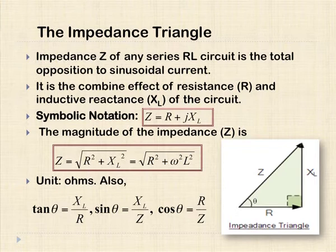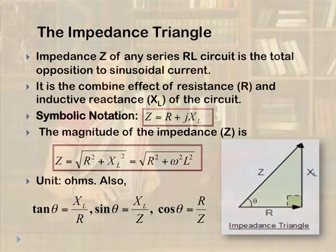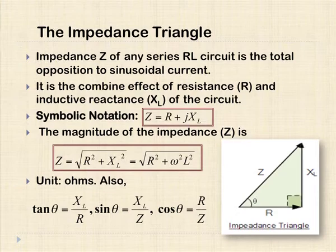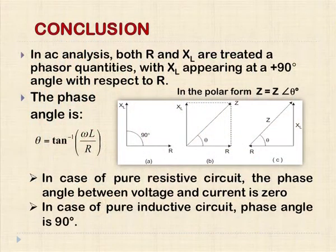Impedance is a complex quantity. We can symbolically represent it as Z = R + jX, where j represents the 90-degree phase shift. The magnitude of the impedance is Z = √(R² + XL²) and its unit is ohm. We can conclude that in AC analysis, both R and XL are treated as phasor quantities, with XL appearing at a +90 degree angle with respect to R.